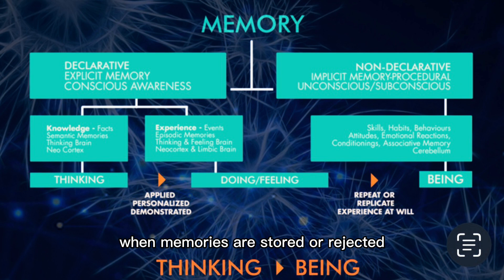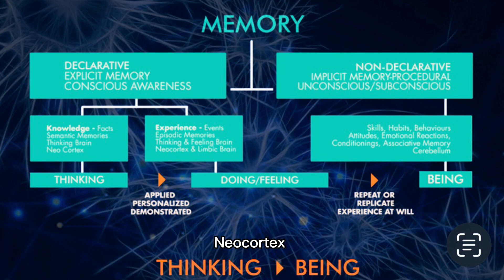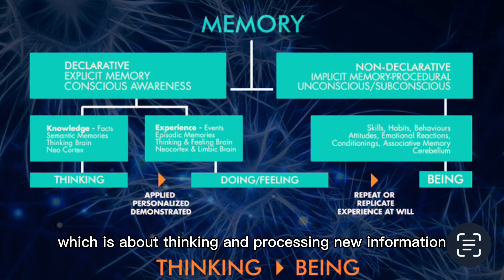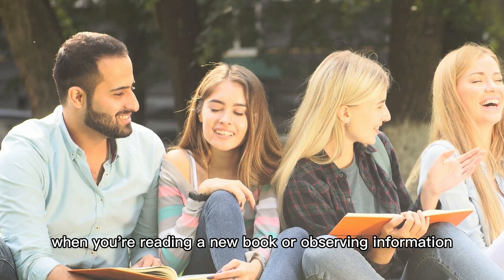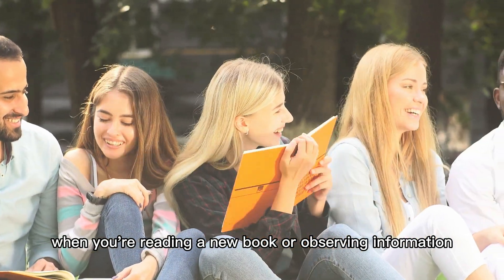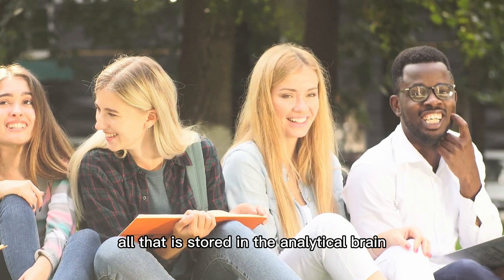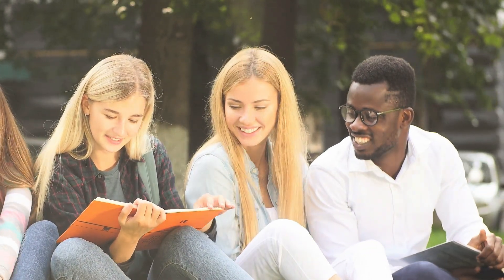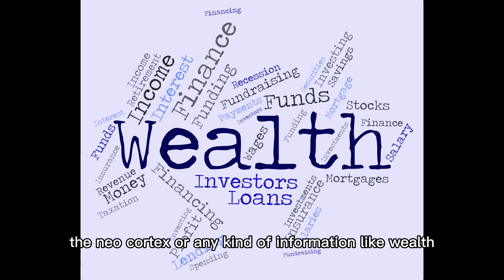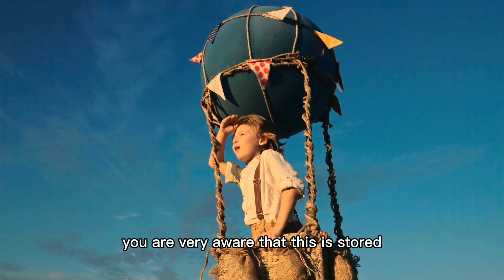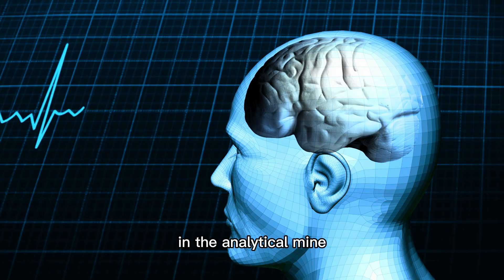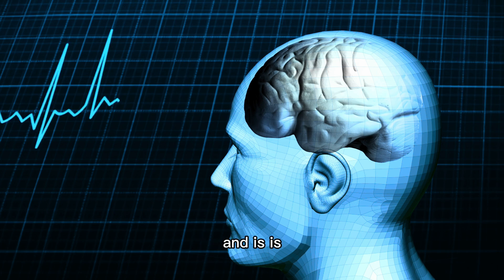When memories are stored or rejected, there are three types of brains within the human brain. For example, when you are reading a new book or observing information, all of that is stored in the analytical brain and intellect — the neocortex. Any kind of information, whether about wealth, happiness, patience, or parenthood, is stored in the analytical mind, also called the neocortex brain.